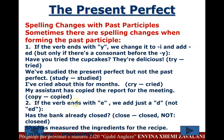If the verb ends with E, we add just a D, not -ED. Example: 'Has the bank already closed?' — close → closed. 'She has measured the ingredients for the recipe.' — measure → measured (just add D).